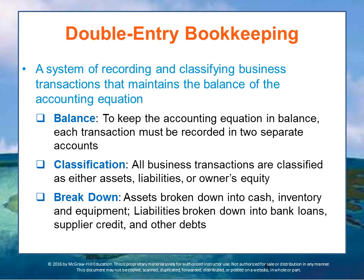When a transaction occurs — say you go buy something — you record the asset, and you record how you paid for it. If you bought it with cash, you reduce the cash account and increase the asset account, because it's moved from cash into an asset. If you borrowed money — bought it on a credit card, for example — you increase the amount you owe the creditor and also increase the amount in your asset account.